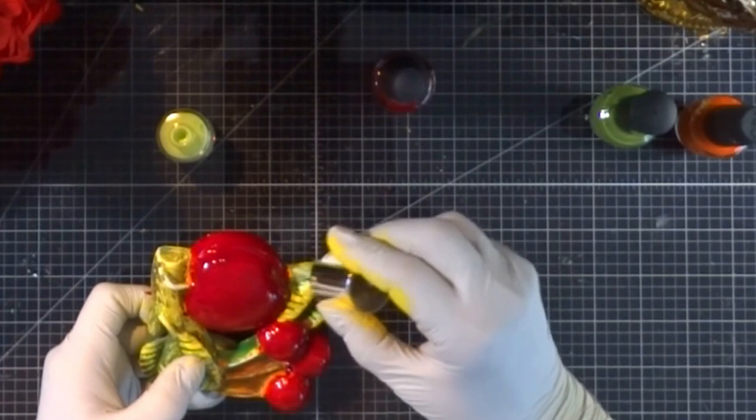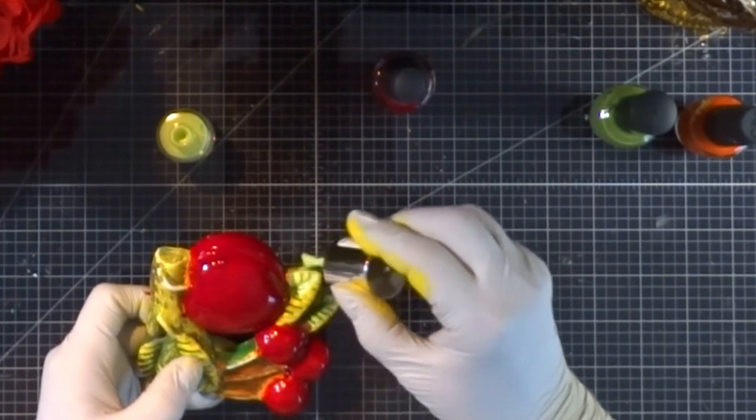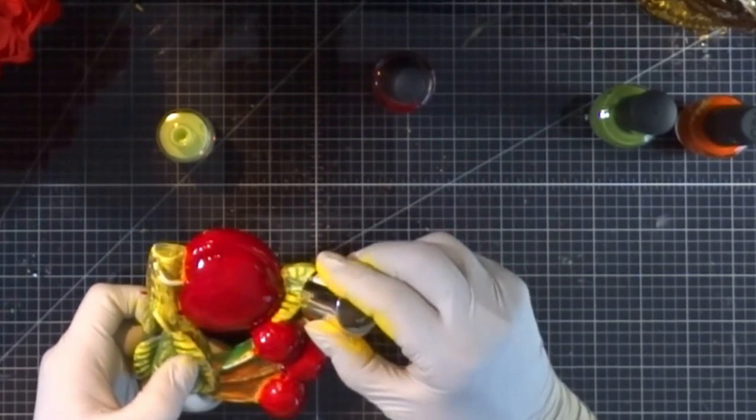The undercoat for the leaves I'm going to be using a lime green lacquer right over the yellow.